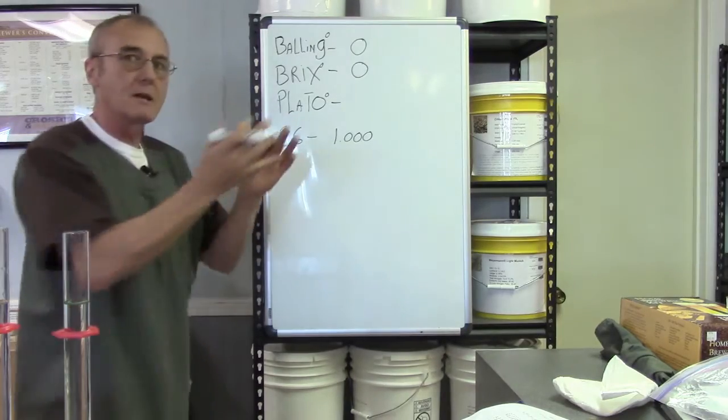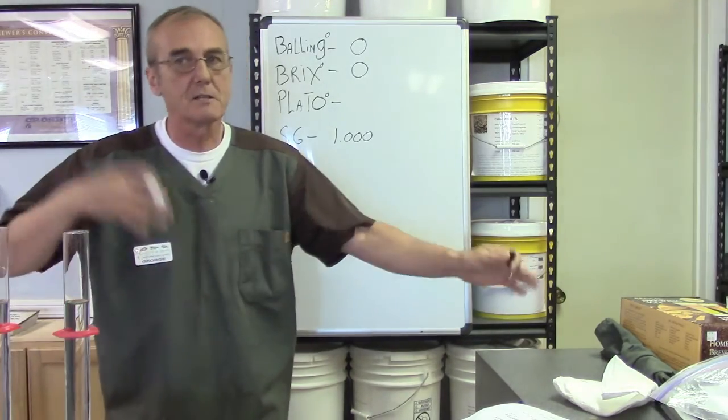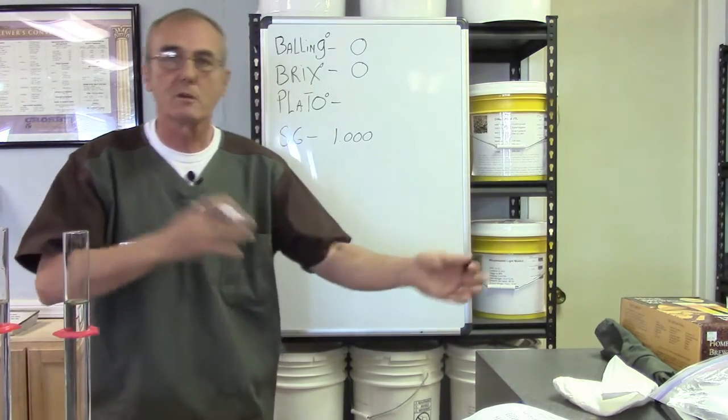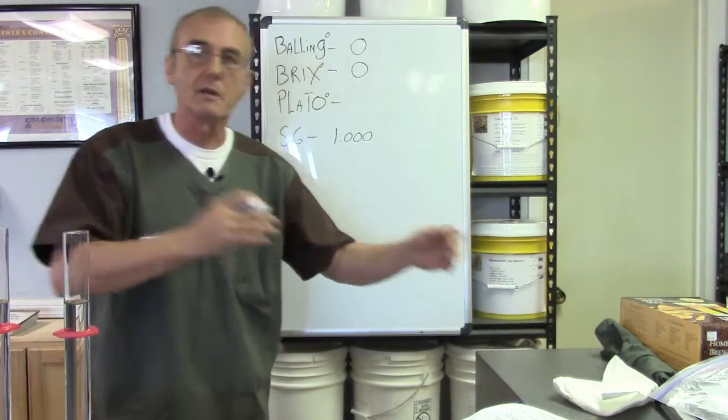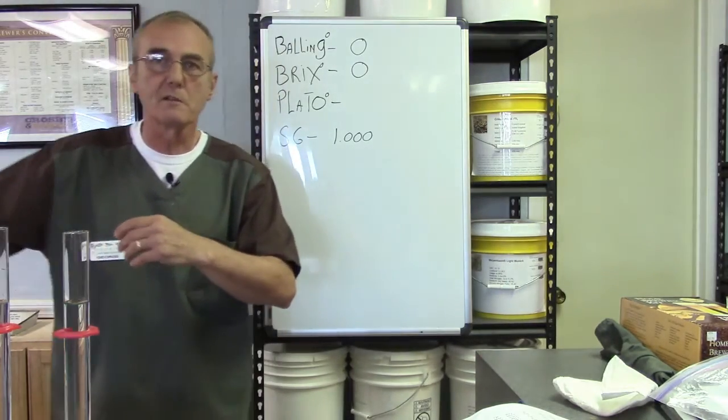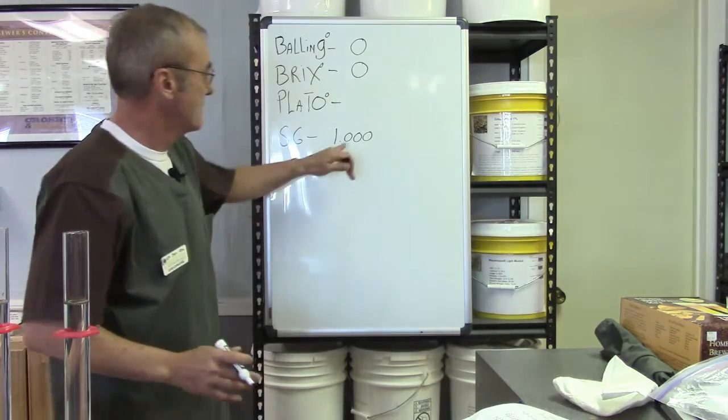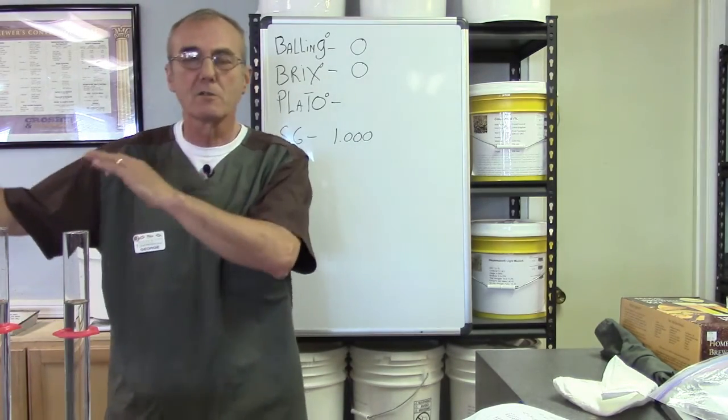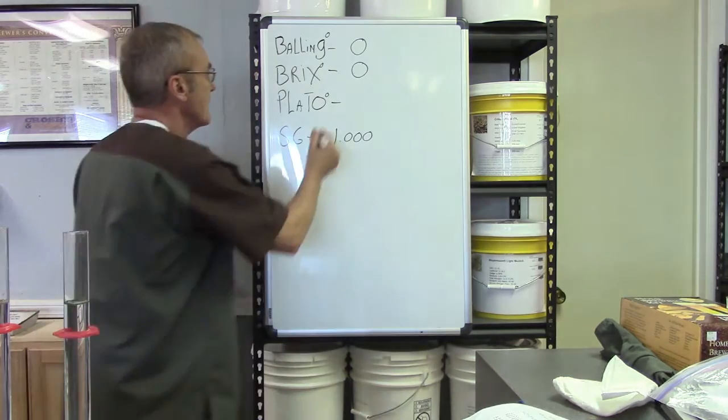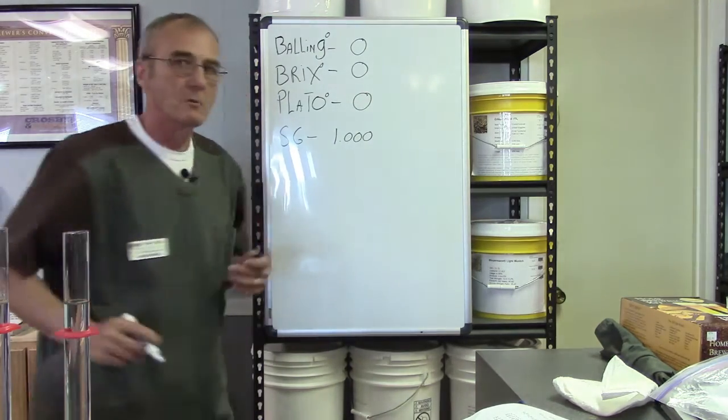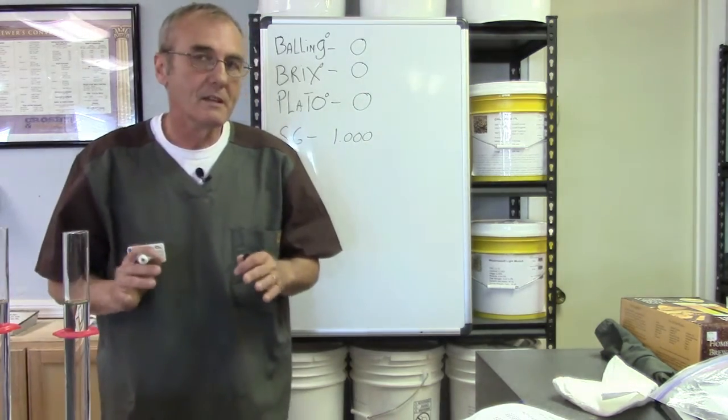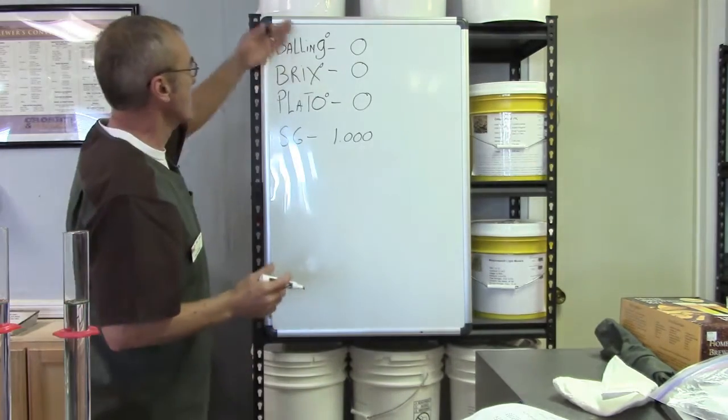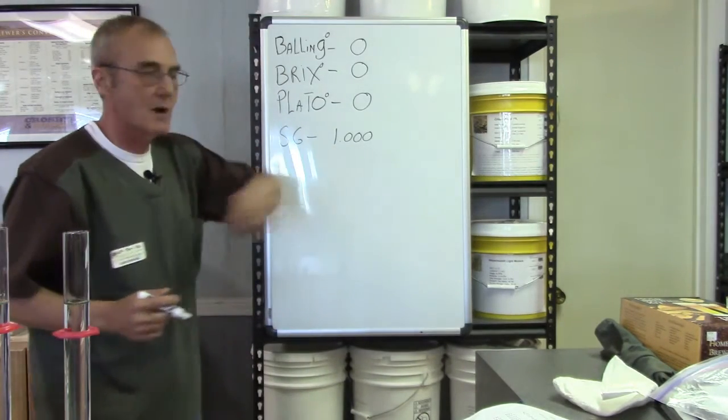And then Plato came along in the 1900s, and they did some more calculations, and they figured, well, the conversions between the degrees into specific gravity at the fifth and sixth decimal place, we only go three. But at the fifth and sixth decimal place is a little bit off, so they refined it and corrected it. But it still starts at zero. Interestingly enough. So all three of these are zero scales, and this specific gravity starts at one.